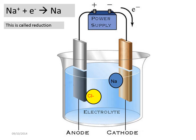For example, in the case of a sodium ion, sodium ions would gain one electron to become a sodium atom. This is called a reduction reaction.